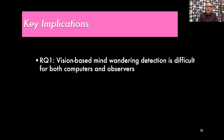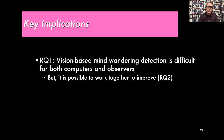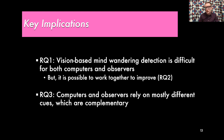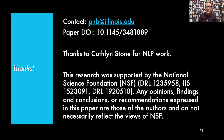Key implications: the first research question confirmed that mind-wandering detection is a very difficult task. The second showed it's possible for computers and humans to work together to improve accuracy. The third found that the cues computers and observers rely on are mostly complementary, which explains the advantages of fusion and suggests future work to extract more observer-identified cues to improve computer predictions. Please feel free to reach out if you're interested in this work, and check out our paper. Thank you.